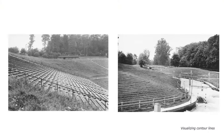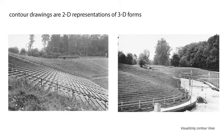Rows of seating in an athletic stadium or amphitheater provide an excellent way to visualize a series of contours that define a bowl-shaped form. It is important to emphasize that contour drawings are two-dimensional representations of three-dimensional forms.